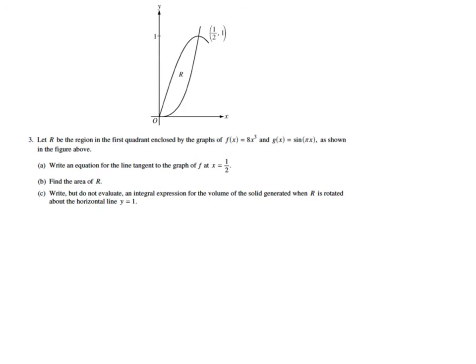On to part C. In part C, it is no calculator, but here they're very kind to us and they say, write, but do not evaluate. So we just have to set up the integral expression for the volume of the solid generated when R is rotated about the horizontal line y = 1. Let's look at that horizontal line first. So horizontal line y = 1 is going to go right through there. I didn't draw that perfectly, but it should have gone right through the intersection.